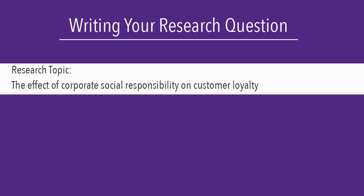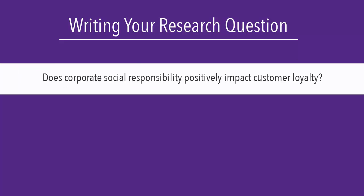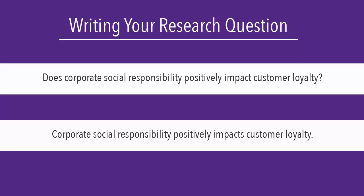The first thing you need to do is write your research topic as a sentence or question. For example, if I'm interested in researching the effect of corporate social responsibility on customer loyalty, my research question might be: Does corporate social responsibility positively impact customer loyalty? Or if I state my topic as a sentence, I might write: Corporate social responsibility positively impacts customer loyalty.